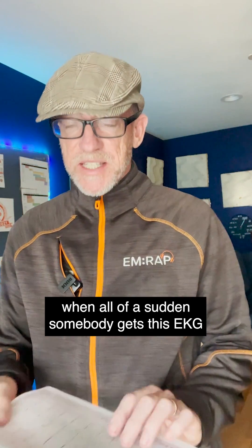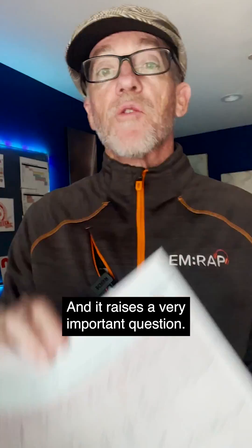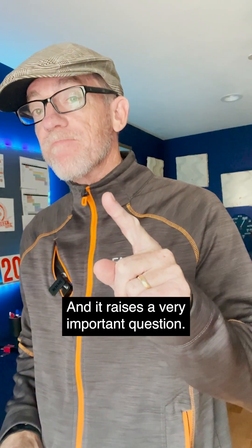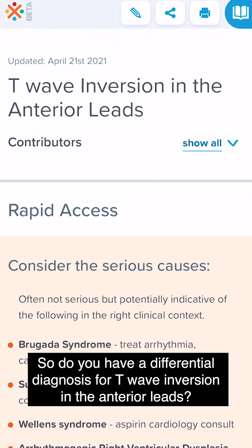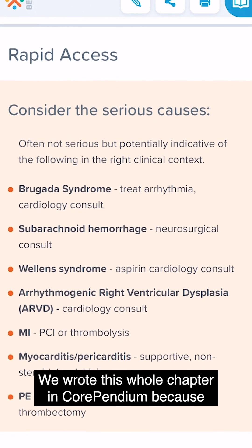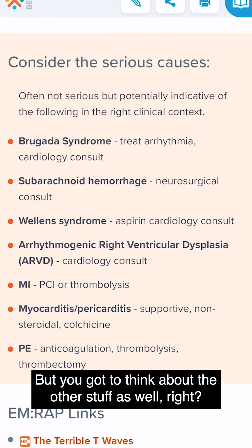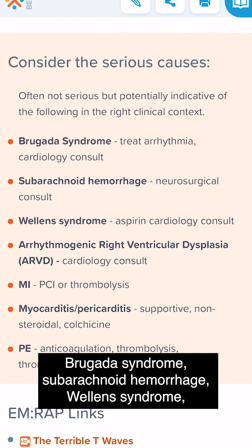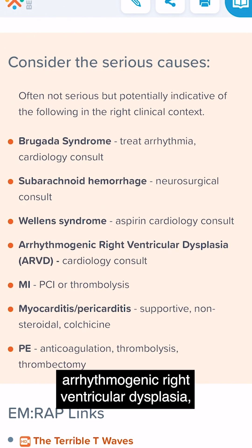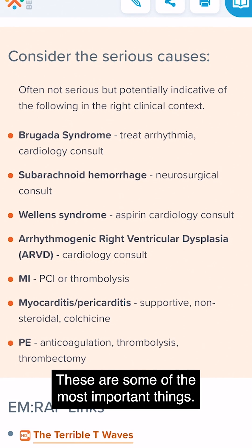So you're minding your own business when all of a sudden somebody shoves an EKG in front of your face — and it raises a very important question: do you have a differential diagnosis for T-wave inversion in the anterior leads? We wrote a chapter on this in Corpenium because it comes up frequently. Everybody remembers MI, but you've got to think about the other stuff too: Brugada syndrome, subarachnoid hemorrhage, Wellens syndrome, arrhythmogenic right ventricular dysplasia, myocarditis, pericarditis, PE.